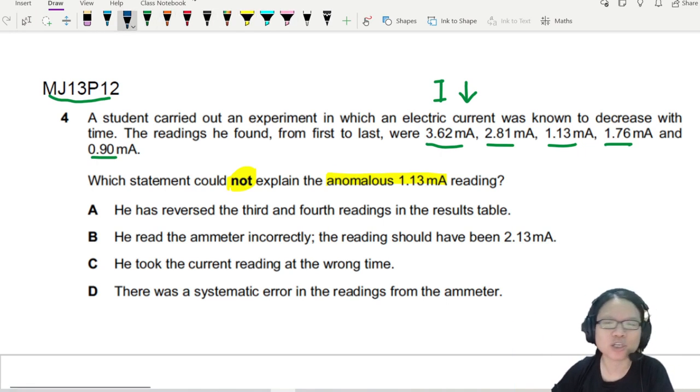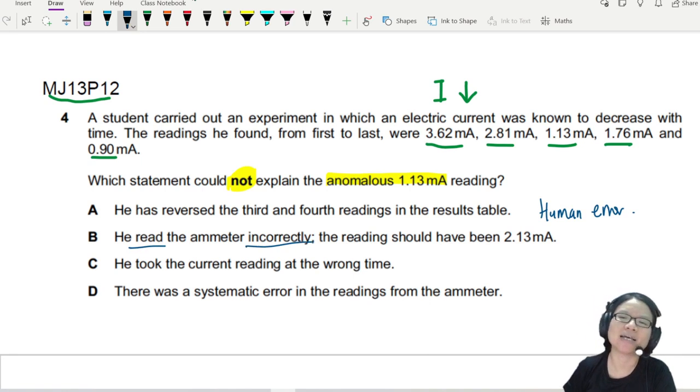Happens to the best of us, possible human error. Option B: He read the ammeter incorrectly, this should be 2.13. Also can, also can, human error.